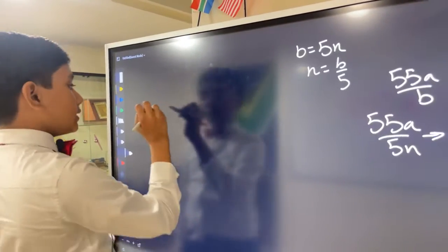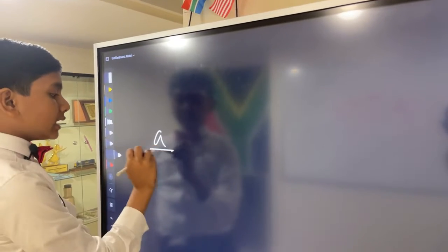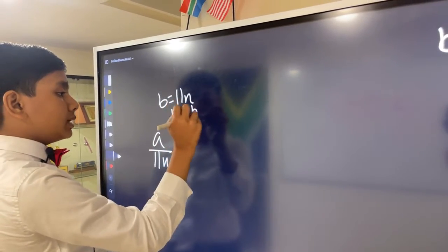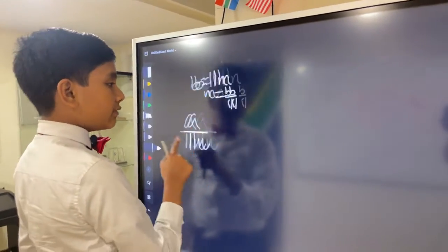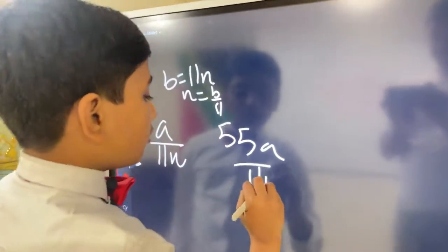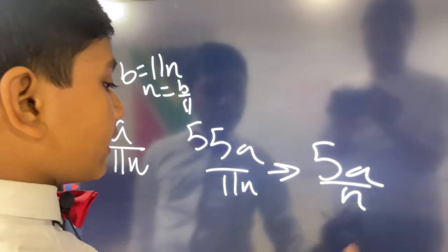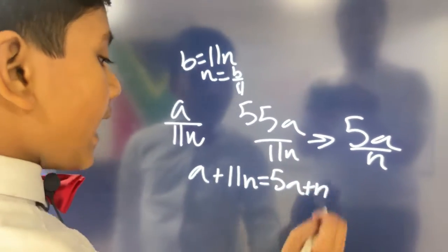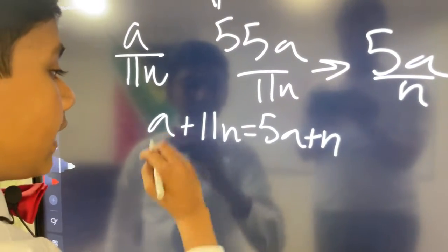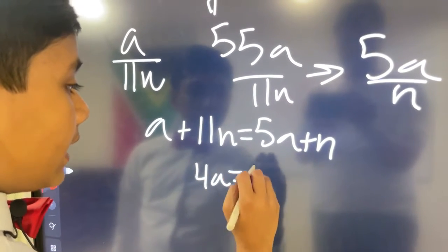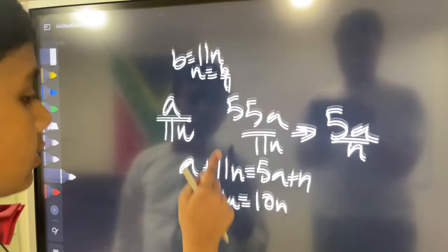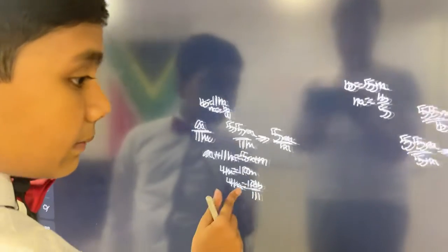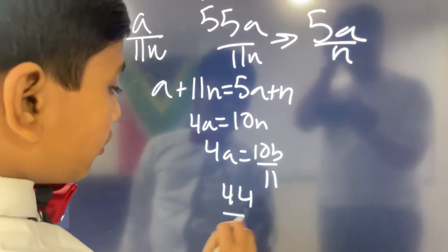The other possibility is that B is a factor of 11, in which case we can express B as 11 times some number N. So N is equal to B over 11. Keep that in mind. So we have A over 11N, and then we have 55A over 11N, which when expressed in the simplest form is equal to 5A over N. So now we know that A plus 11N is equal to 5A plus N. And that means that 4A is equal to 10N. And we know N is equal to B over 11. So 4A is equal to 10B over 11. So that means B is equal to 44 over 10A.